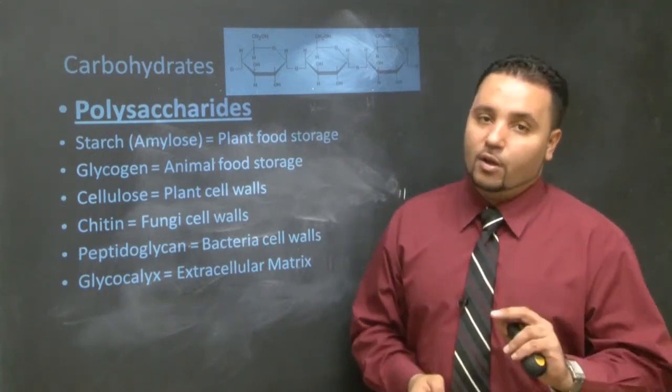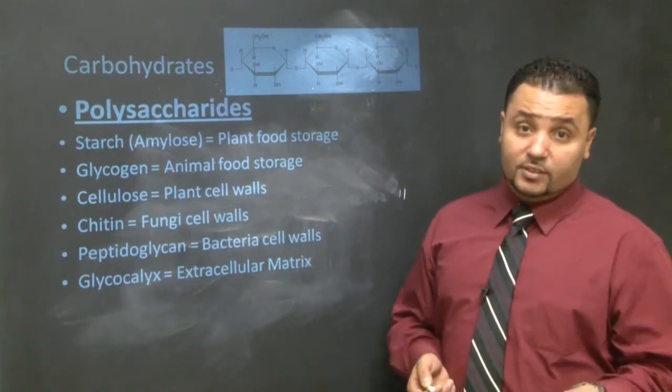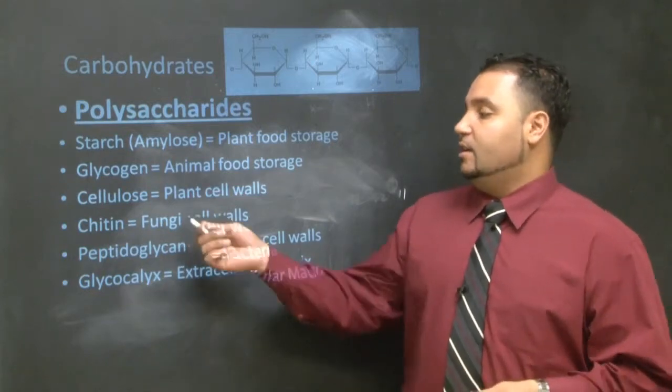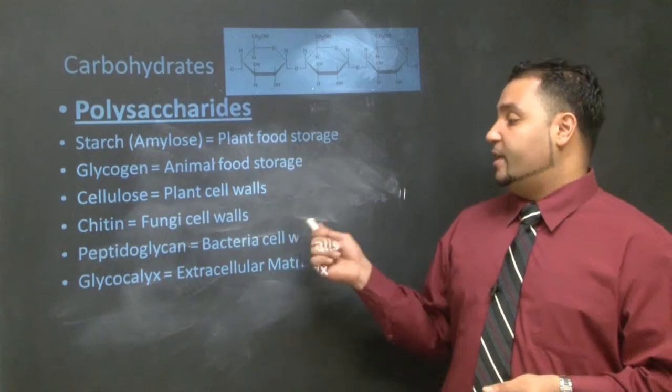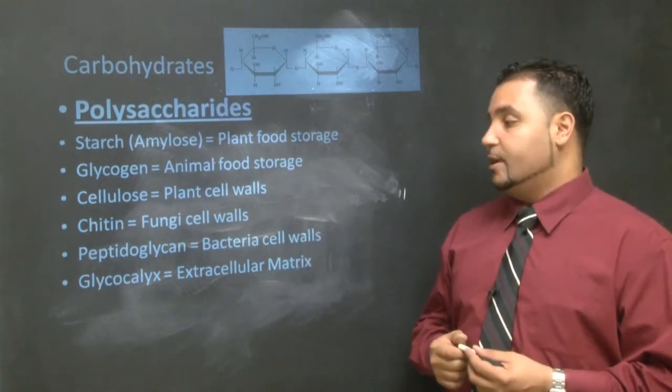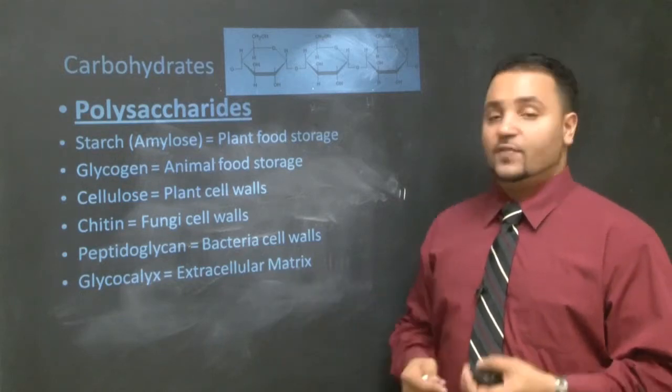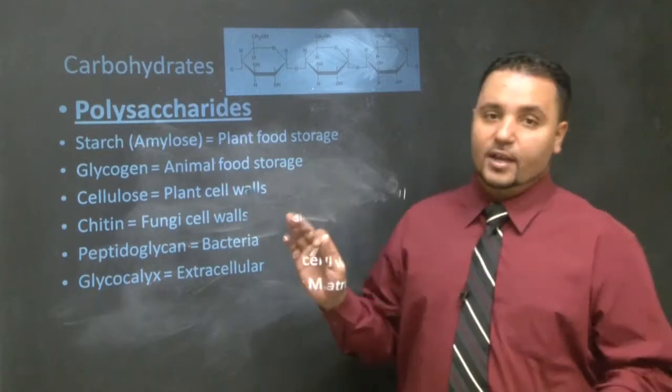Then you should know about your cell walls. Cellulose is found in plant cell walls, also known as dietary fiber. This is that stuff we can't digest. Chitin is found in fungi cell walls. And then peptidoglycan is found in bacterial cell walls. Another thing is glycocalyx - you might want to know about that. There's another polysaccharide, and it's found in the extracellular matrix.